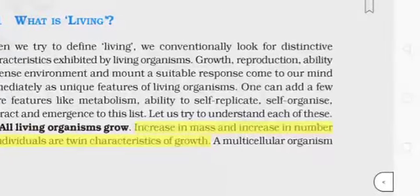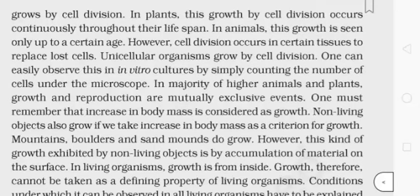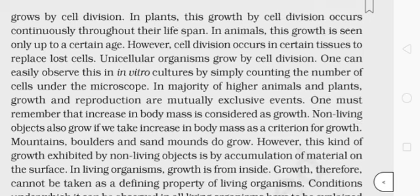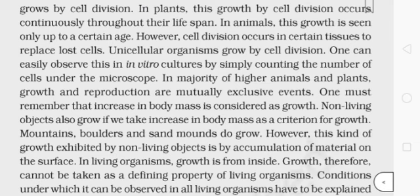A multicellular organism grows by cell division. In plants, growth by cell division occurs continuously throughout their lifespan. In animals, this growth is seen only up to a certain age; however, cell division occurs in certain tissues to replace lost cells. Unicellular organisms grow by cell division, and this can be observed in in vitro cultures by counting the number of cells under the microscope.